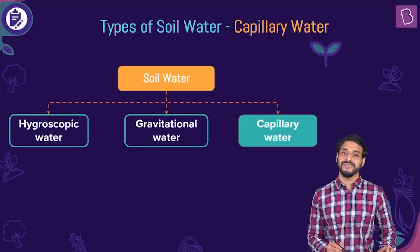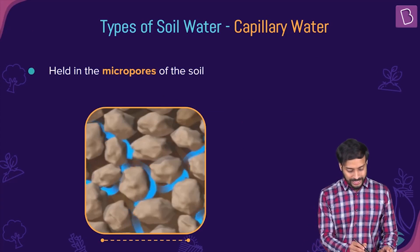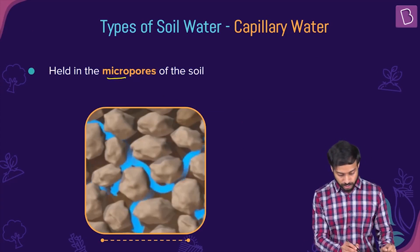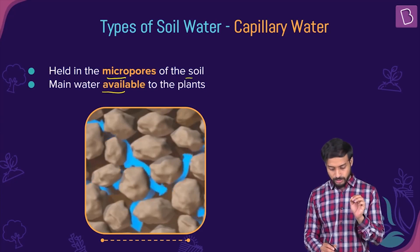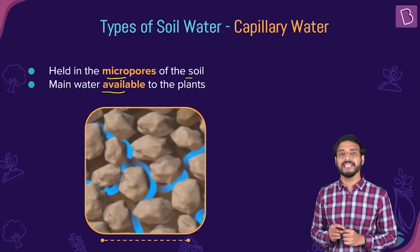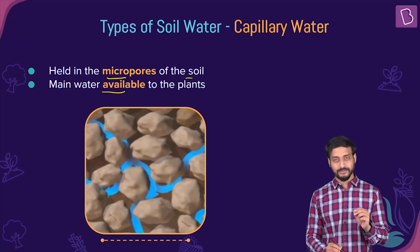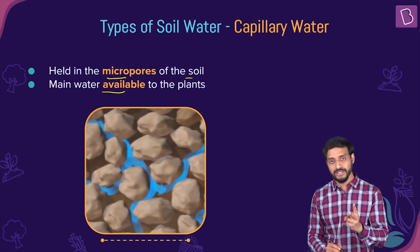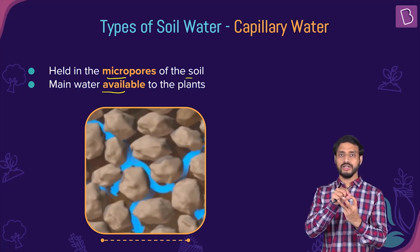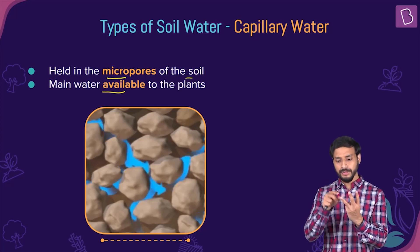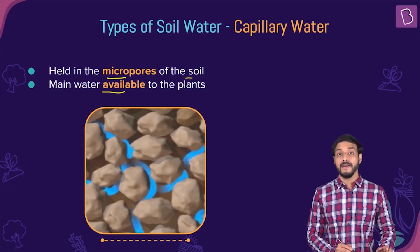That leaves us with capillary water, which is definitely the type available for plants. Capillary water is held in the micropores — the smaller pores of the soil — and can be easily taken up by plants. So to summarize: hygroscopic water is not available to plants; gravitational water is mostly not available; but capillary water is the water which is actually available for plants to use. Please note these down as questions can be asked on this.